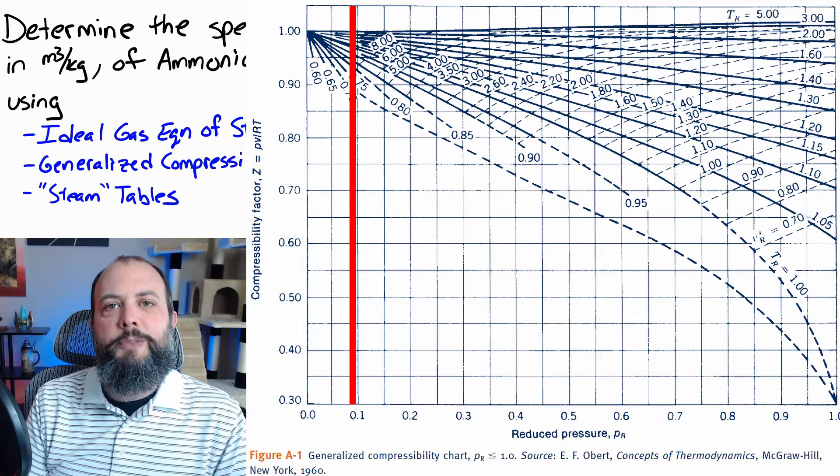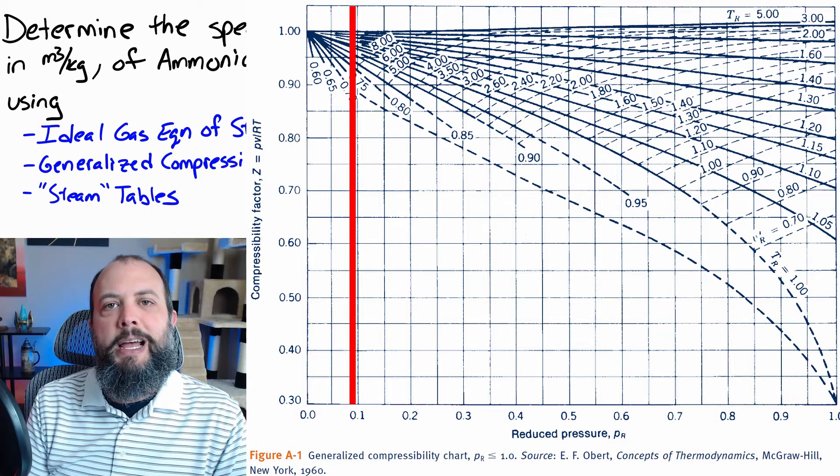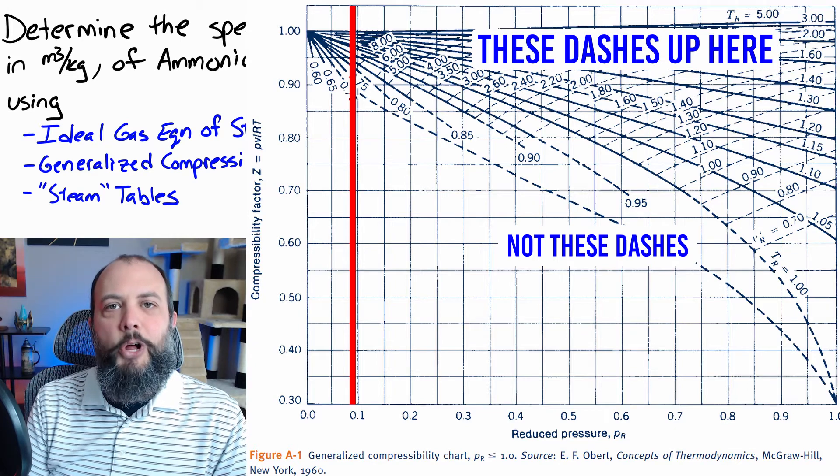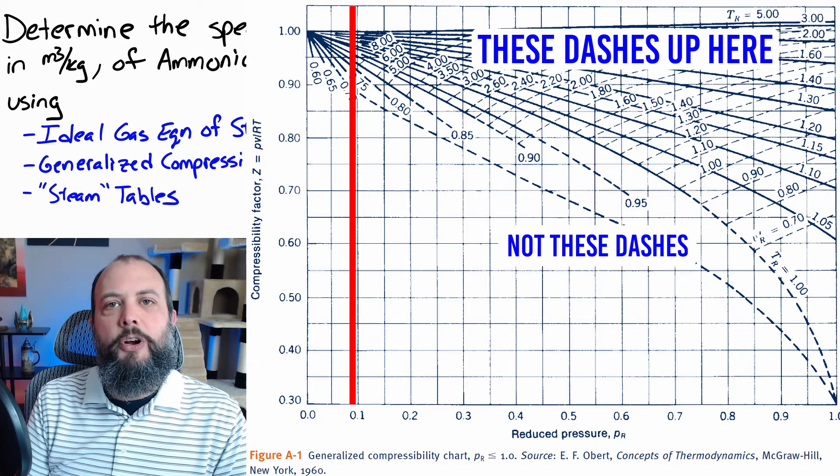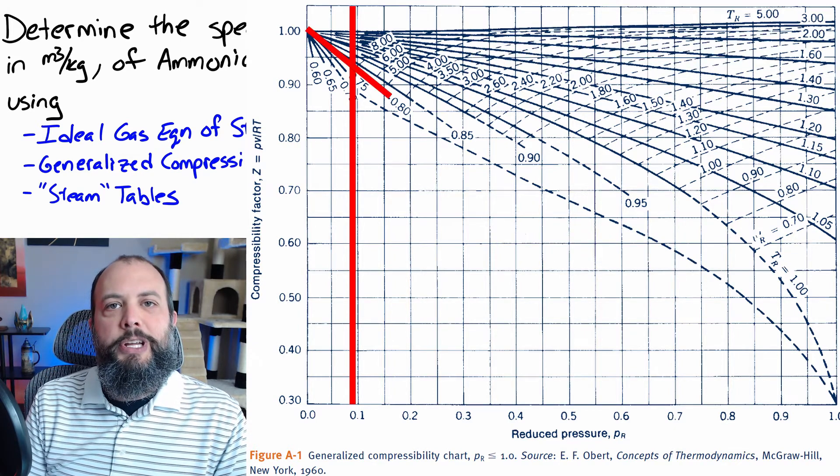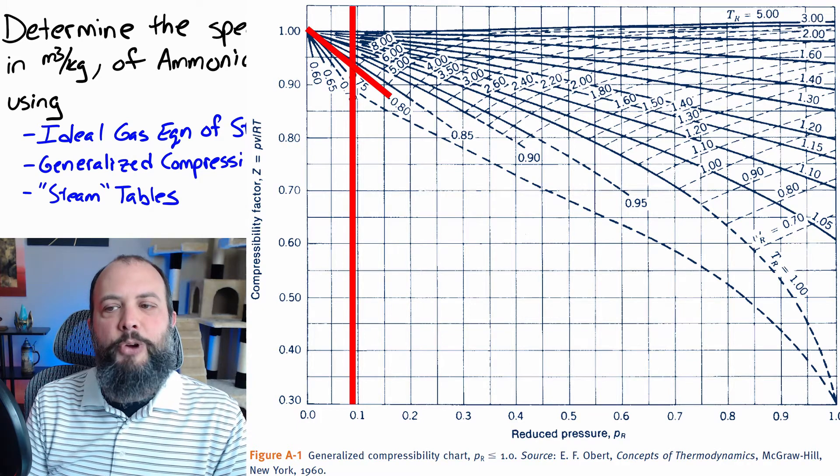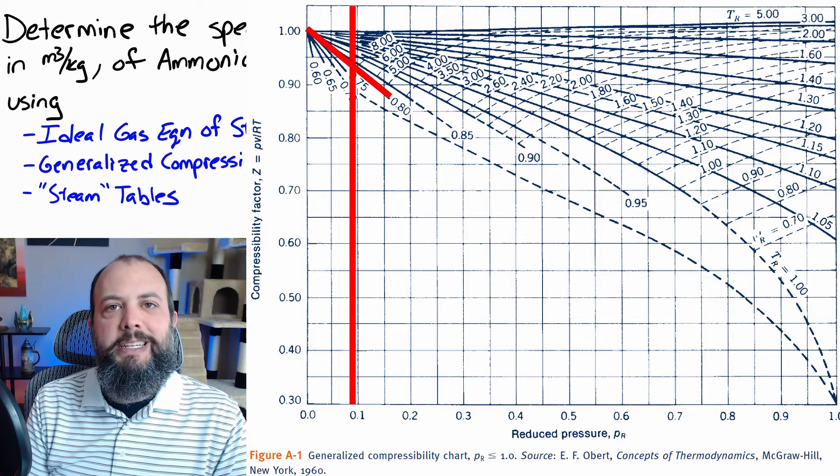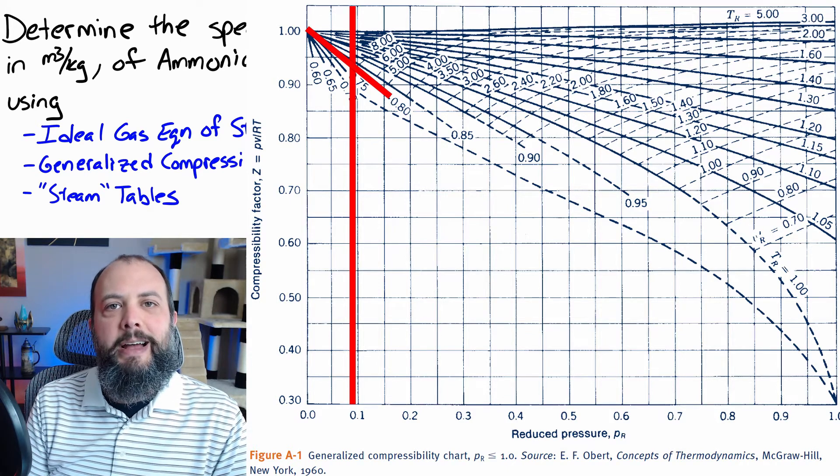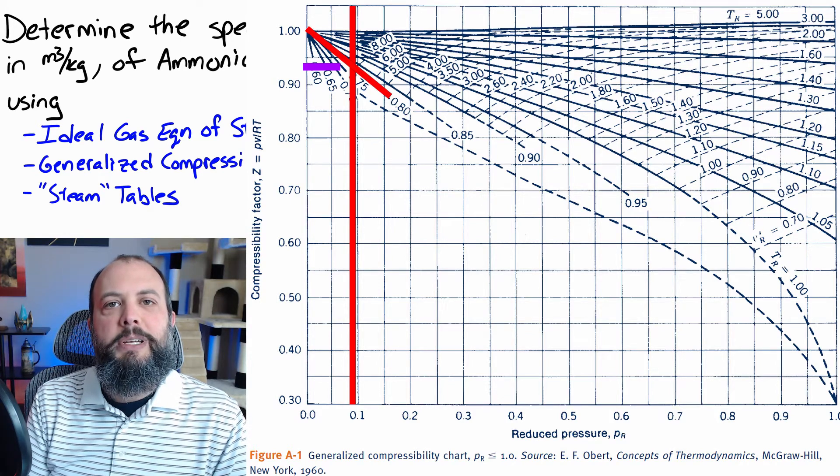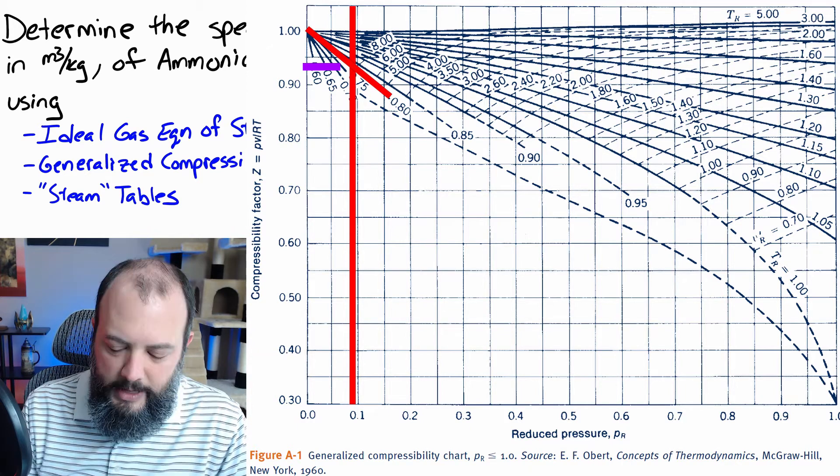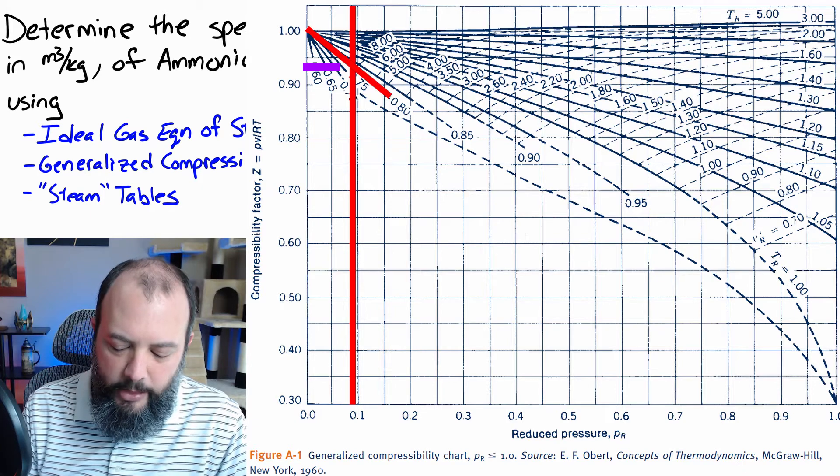Now, the hardest part of reading this chart is probably telling the difference between temperature lines and volume lines. On this version of the chart, the dashed lines refer to volumes and the solid lines are temperatures. So, we're going to look for the temperature line that is approximately 0.8 and then look for our reduced pressure on the x-axis at 0.089 and see where those line up and then trace that point over to the left in order to find z. And this looks like z equals approximately 0.93.